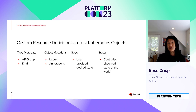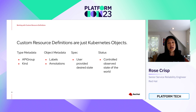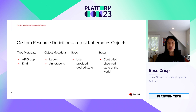Custom resource definitions are Kubernetes objects that consist of four primary sections. Type metadata includes API group and kind. Object metadata contains labels and annotations. In the spec section, we specify properties for the custom resource. The fourth and last section is the status, which indicates the current state of the CRD. We will look at each of these sections in the following slides.